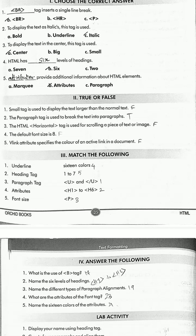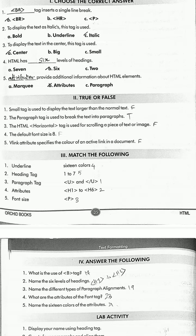The default font size is 3 — as given in page number 24, the first line states the default font size is 3. The V link attribute specifies the color of an active link in a document — false. V link is for visitor link, used to specify the color of a visited link.